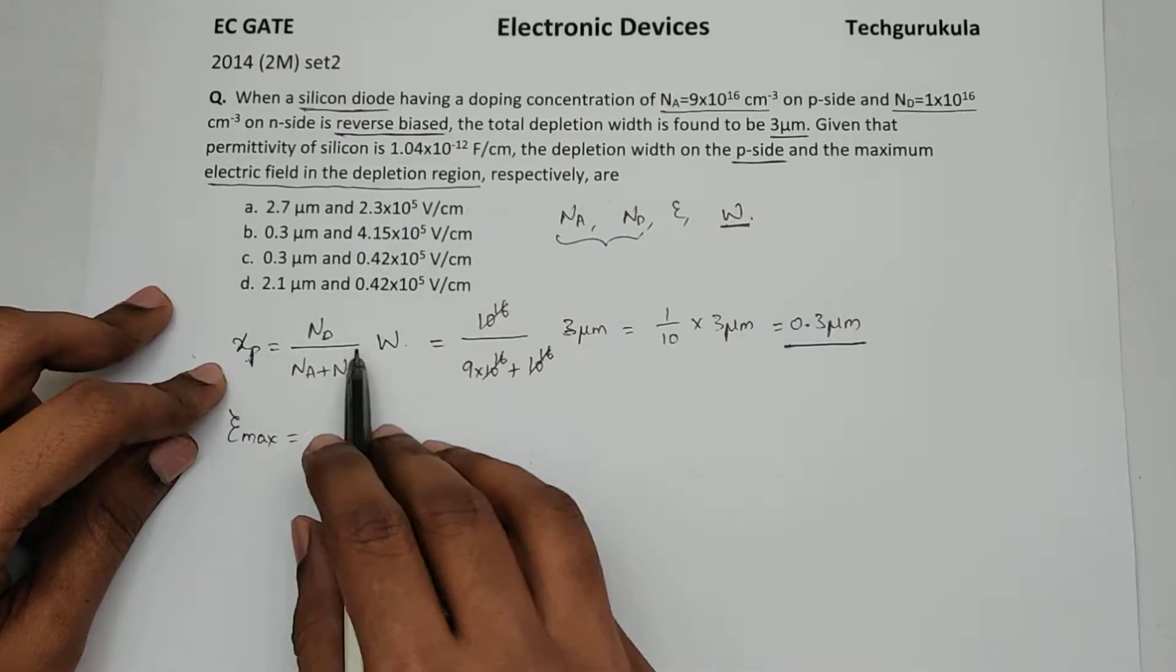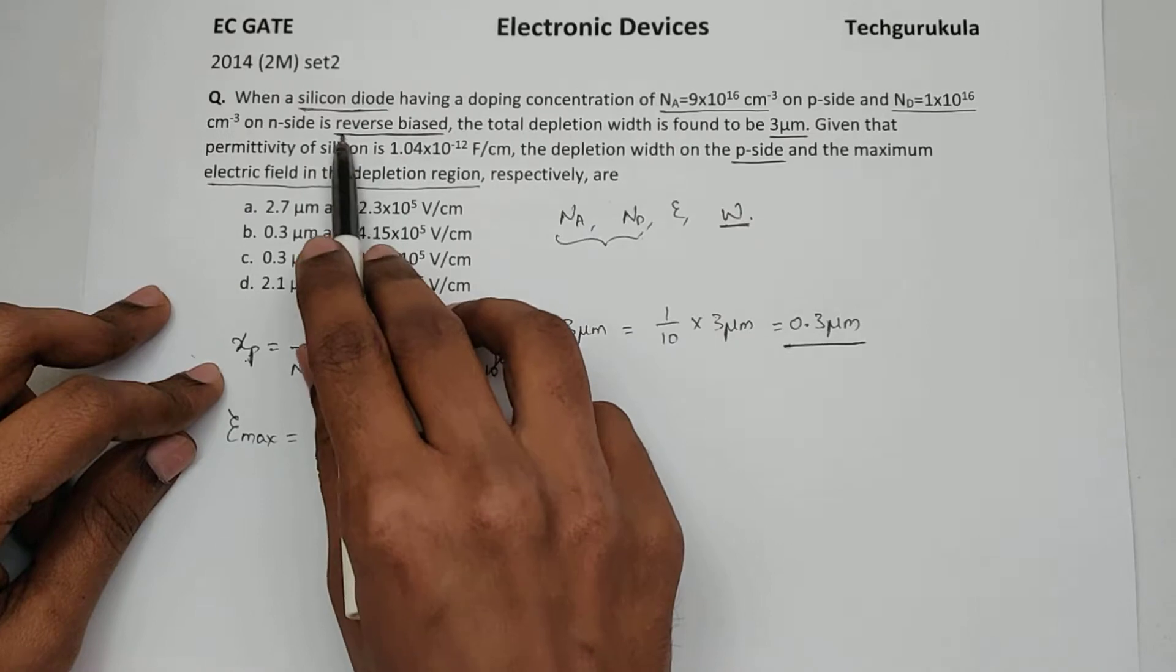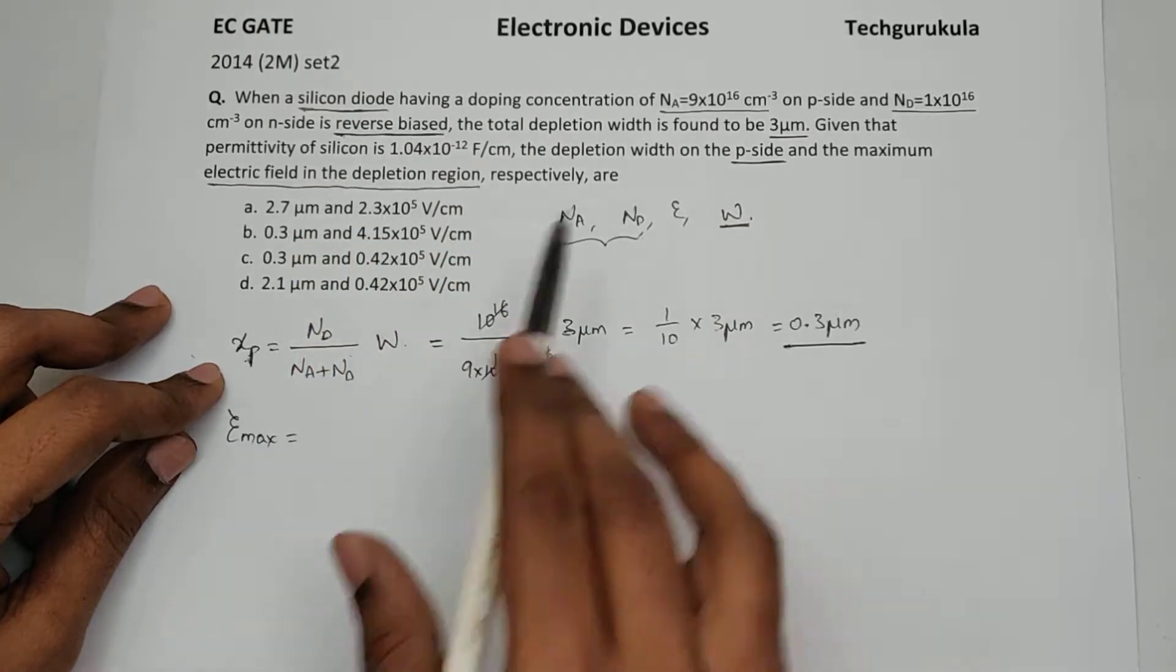Now this relationship is valid, either you are in reverse bias or in equilibrium. This is of course a reverse bias diode, so this is still valid.